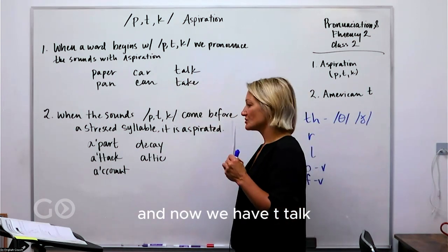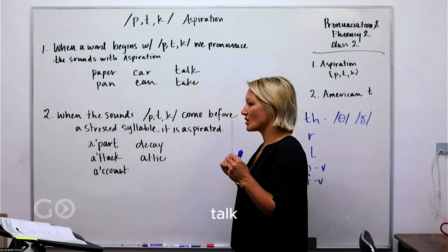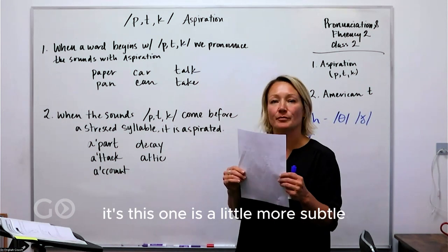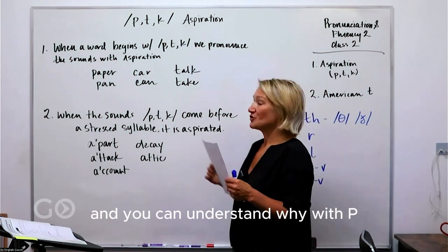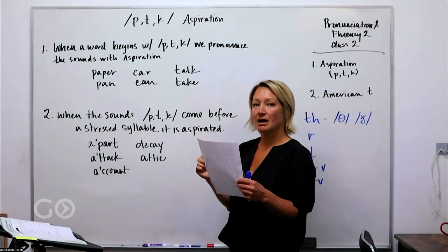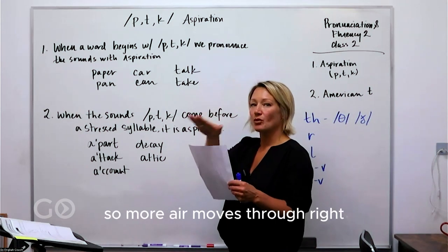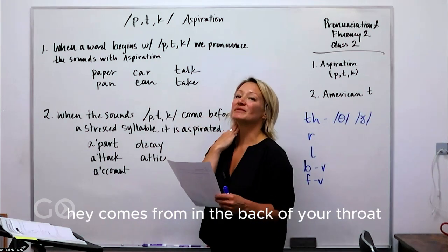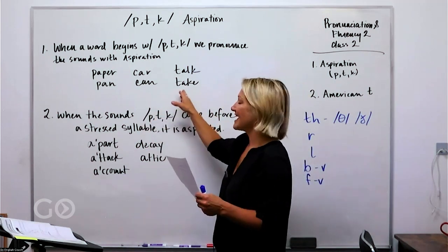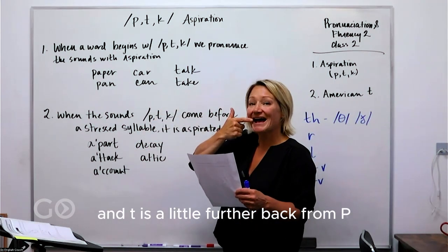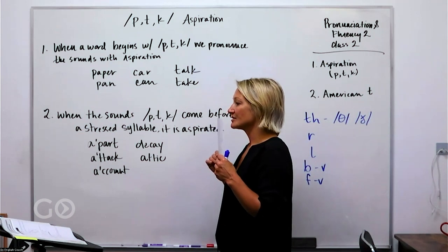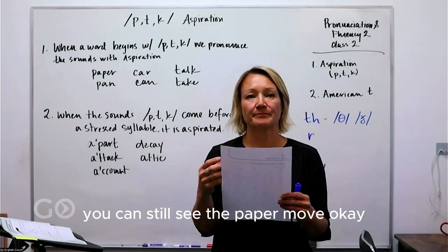Now we have T — 'talk.' This one is a little more subtle; the paper doesn't move as much as with P. With P, we have pressure because of our lips, so more air moves through. K comes from the back of your throat, so less air comes out in a burst. T is a little farther back from P — it's at your teeth — so you can still see the paper move, just not as much as P.